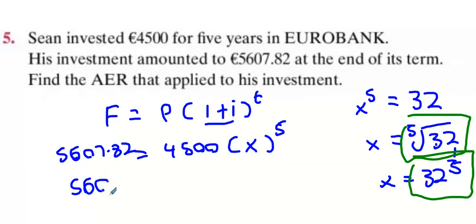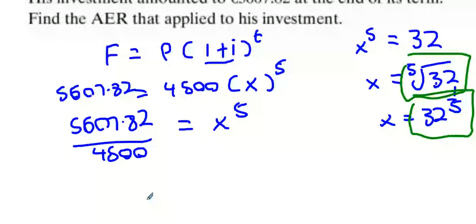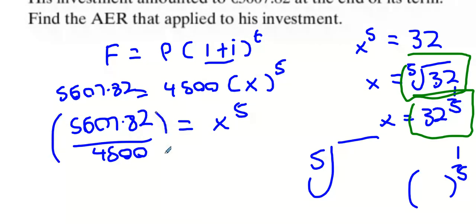So what we're going to do is take 5,607.82 divided by 4,500, and we have x to the power of 5. It's your choice whether you do the fifth root or you do the whole thing to the power of a fifth. I'm going to do to the power of a fifth because later on in the chapter you're going to have to start being more familiar with powers, so I suggest we stick to the power method.